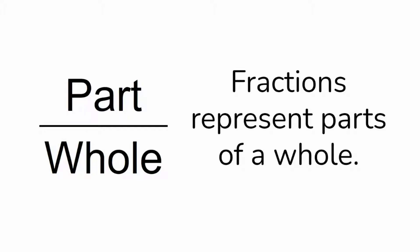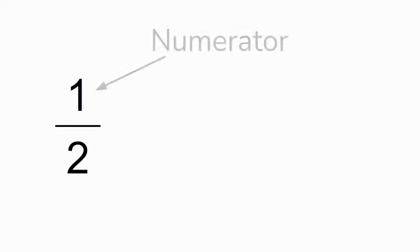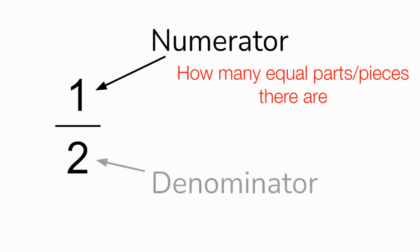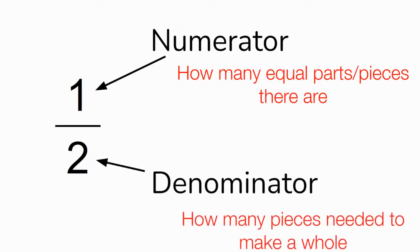So again, fractions represent parts of a whole or a collection. Let's come back to our example with one-half. The top number in a fraction is the numerator, and that number tells us how many equal parts there are. The bottom number is called the denominator, and that tells us how many parts we need to make one whole.